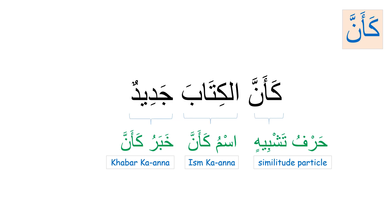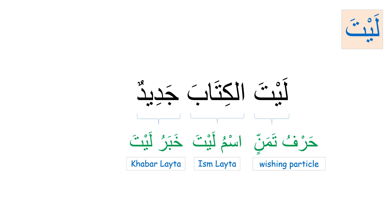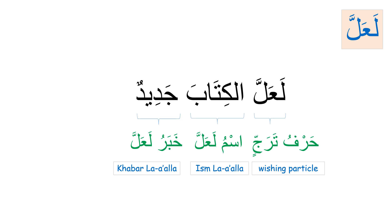Skimming through the nomenclature with the other sisters: ka'anna al-kitaabu jadiidun — ka'anna harf tashbeeh, al-kitaabu ism ka'anna, jadiidun khabar ka'anna. Layta al-kitaabu jadiidun — layta harf tamannin, al-kitaabu ism layta, jadiidun khabar layta. Just give everything enough time to fall into place and you'll realize how easy it is.